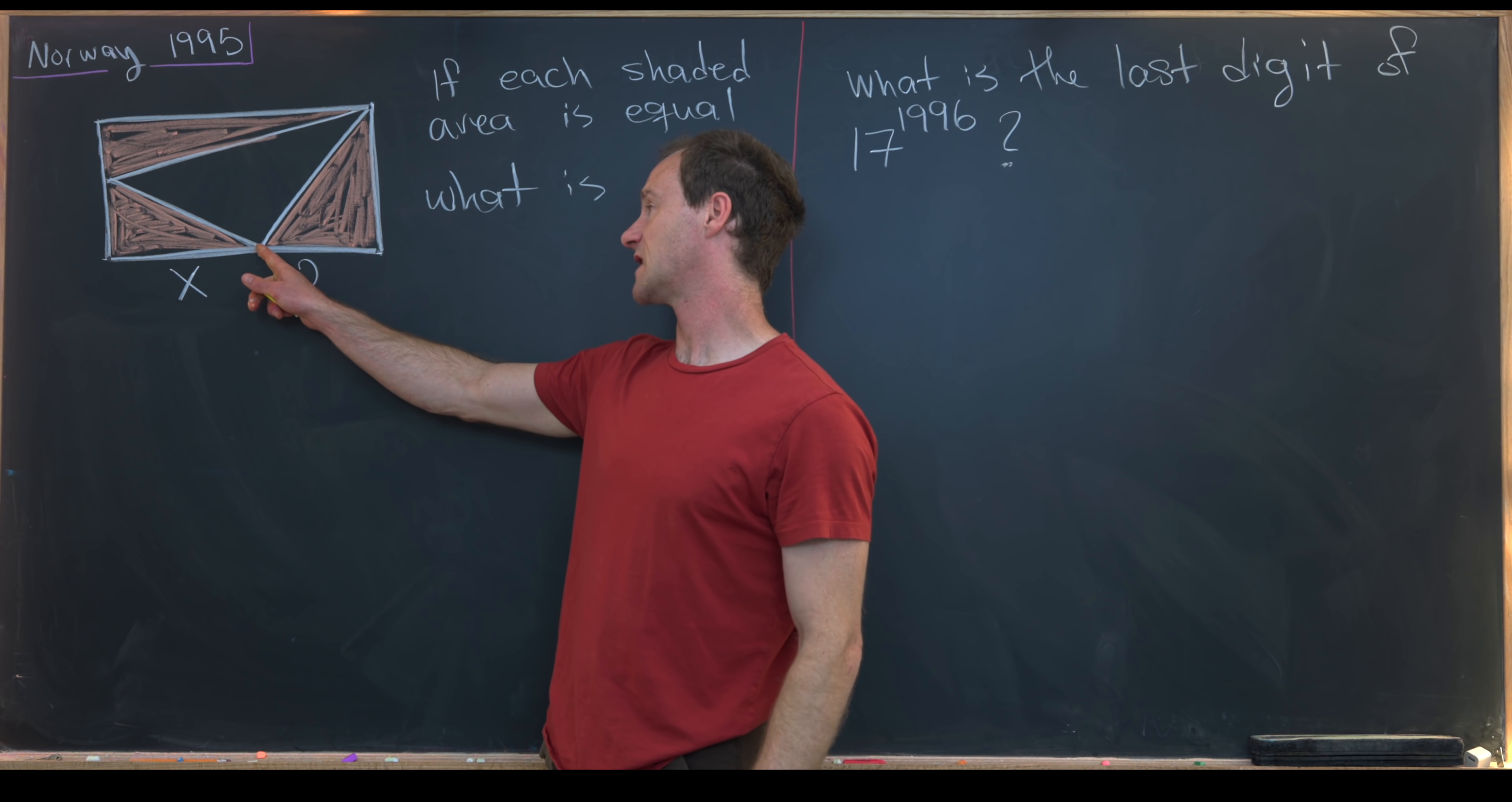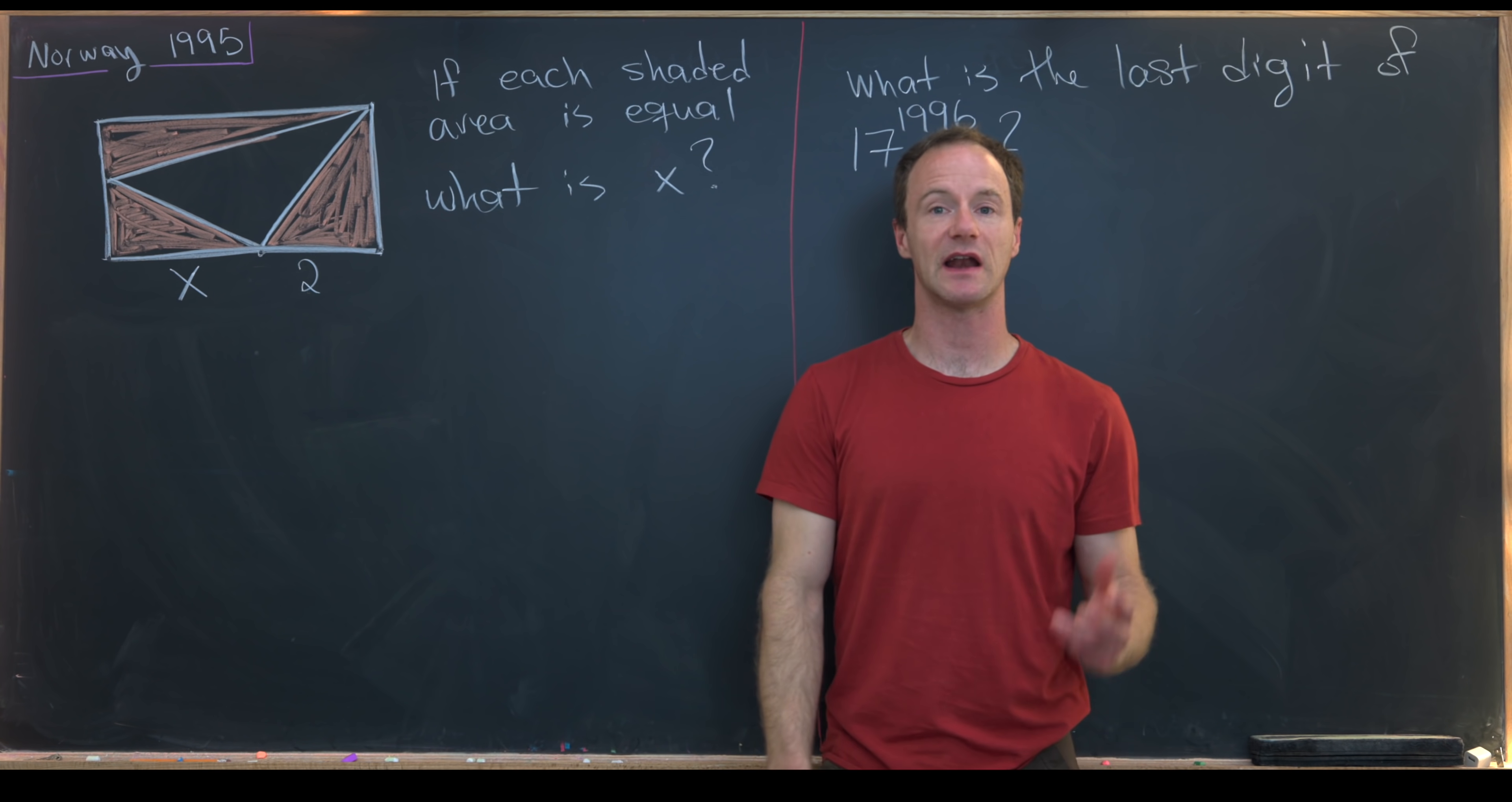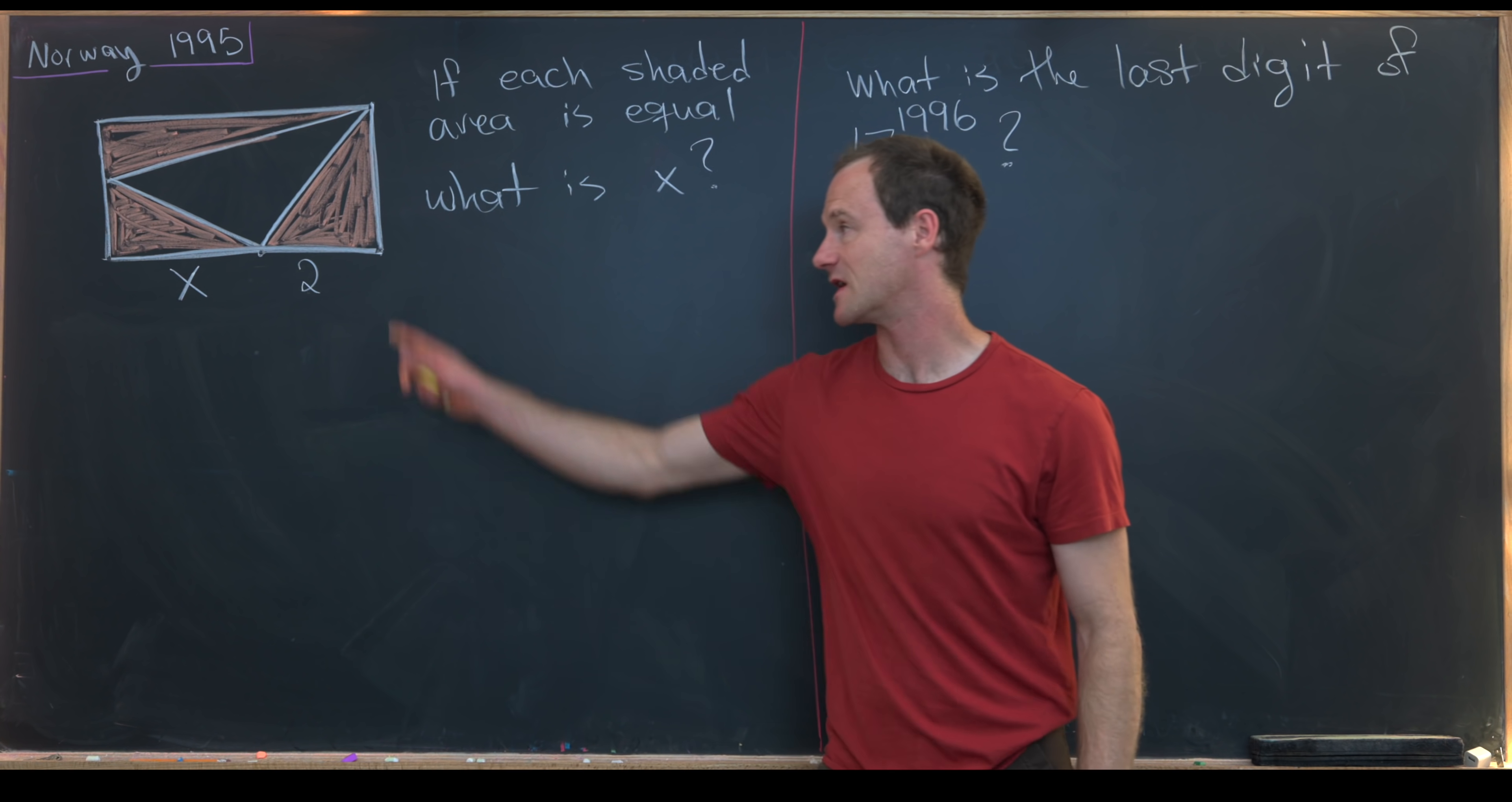Finally, we suppose that the line segment from here, this intersection point, to this vertex is equal to 2, and our goal is to find the measurement of x.